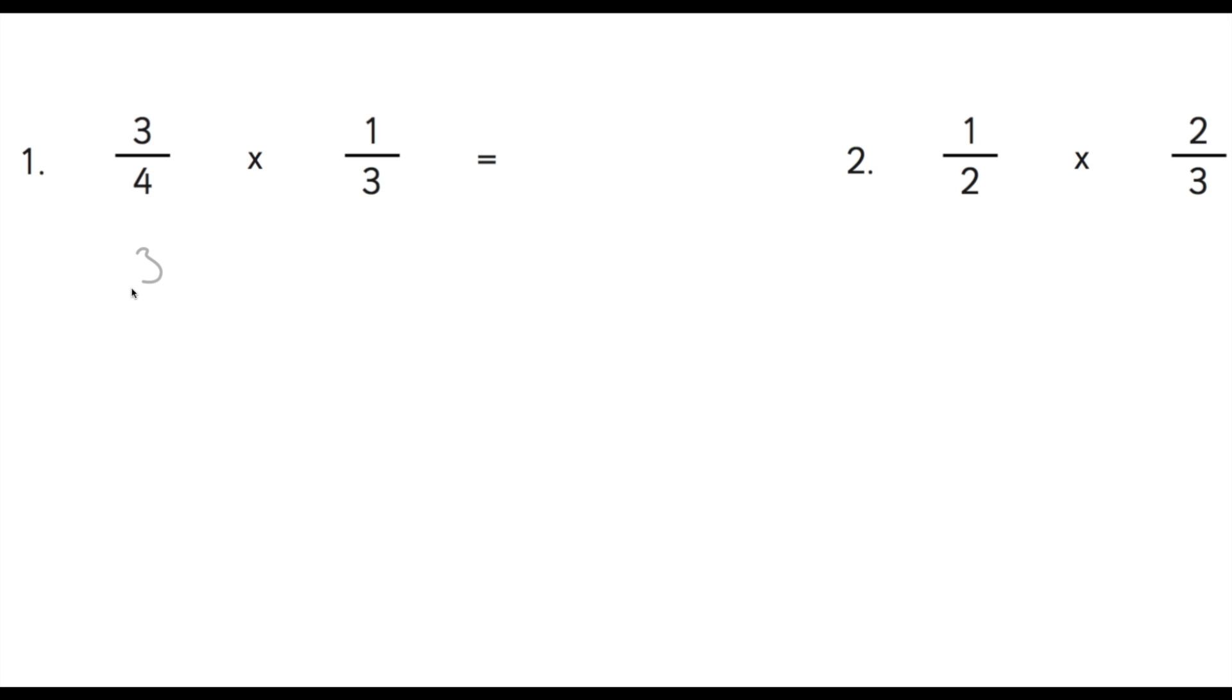So in this example I have 3 quarters multiplied by 1 third. Now when we're multiplying fractions, all we need to do is multiply the numerators together—that's the top number here—and multiply the denominators together, these numbers here. So 3 times 1 equals 3, and 4 times 3 equals 12. So our answer is 3 twelfths.